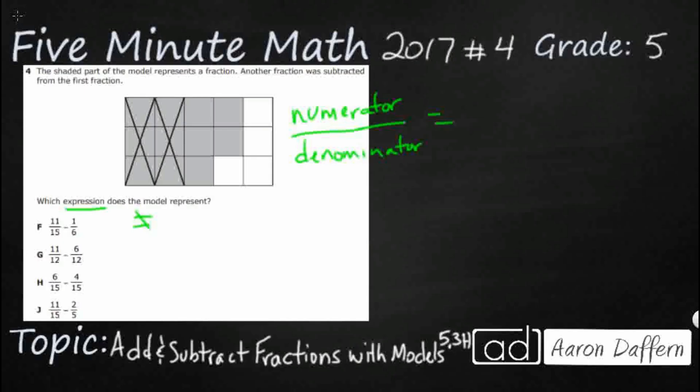So for the shaded portion you see we've got one two three four five across. We've got one two three down. So if we look at that as an array five times three that's going to make fifteen. So we've got fifteenths here.